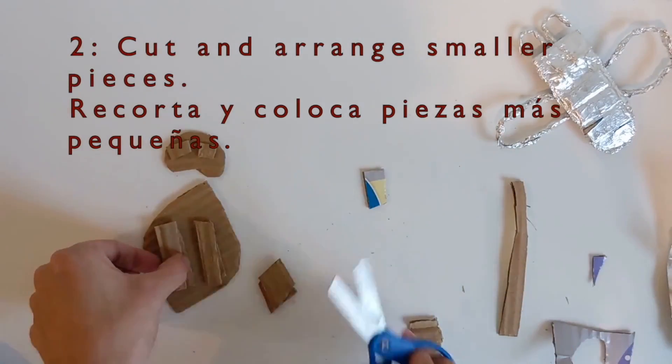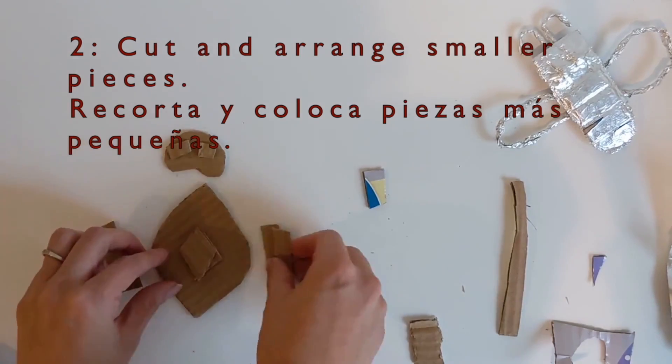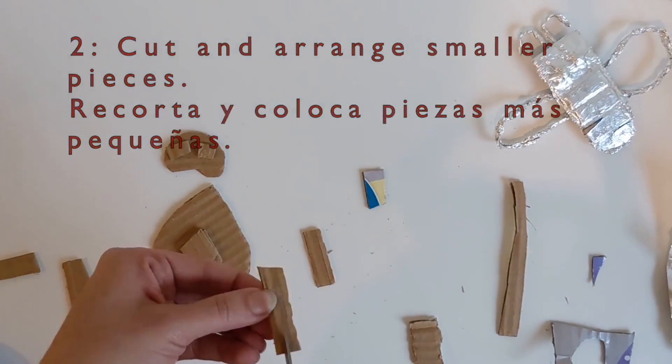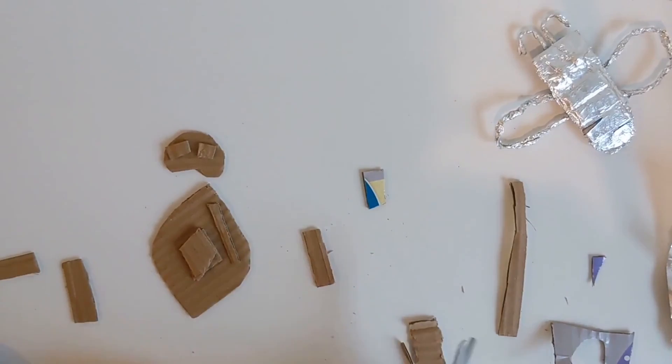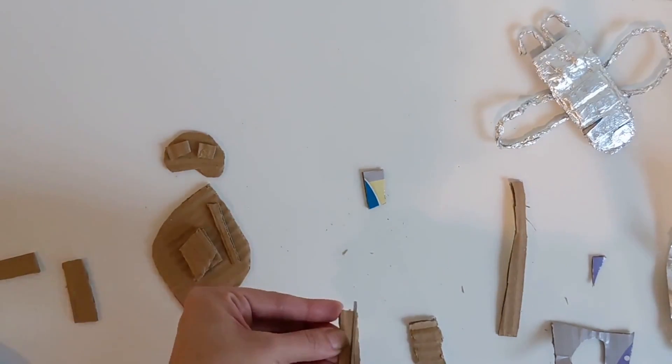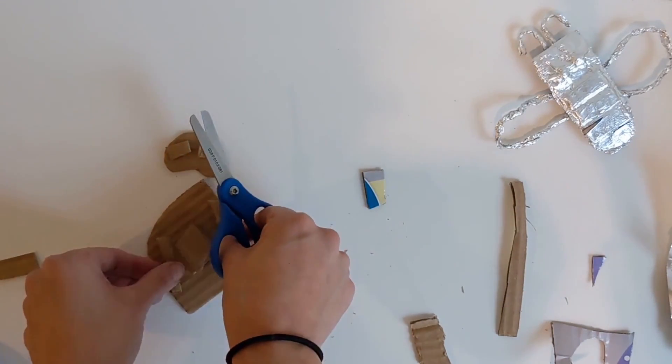Next, use your cardboard scraps to cut out smaller pieces. Arrange the small pieces on top of your big cardboard shapes to make different designs. These small shapes are going to give your artwork extra texture.